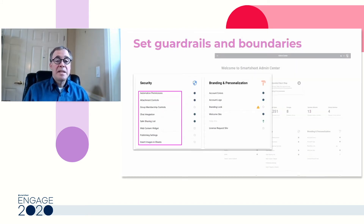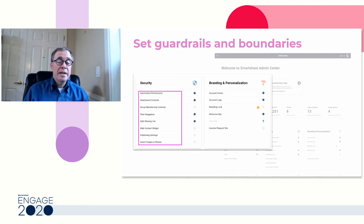Secondly, let's look at ways that we can configure Smartsheet and set guardrails and boundaries. The first I'd like to bring to your attention is the safe sharing list. For some companies, it's possible to share broadly with no restrictions. But if you want more control, you can specify a safe sharing list — these are domains and email addresses that it's safe for someone to share with outside your organization — and you can specify this within Admin Center. This gives you more fine-grained controls over sharing and enables you to manage user behavior and set the right boundaries.